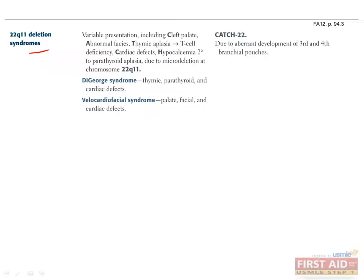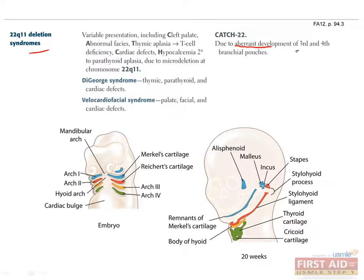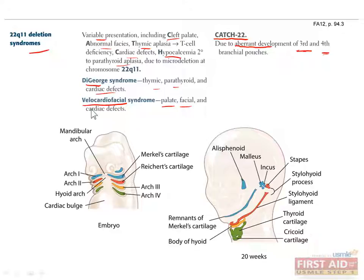Deletions involving chromosome 22 at q11 can lead to several symptoms due to aberrant development of the third and fourth branchial pouches. The third branchial pouch develops into the inferior parathyroid and the thymus, and the fourth branchial pouch develops into the superior parathyroids. The variable presentation includes a cleft palate, abnormal facies, thymic aplasia causing T-cell deficiency, cardiac defects, and hypocalcemia secondary to parathyroid aplasia. You can use the mnemonic CATCH-22 to remember these. DiGeorge syndrome includes the thymic, parathyroid, and cardiac defects, while Velocardiofacial syndrome includes the palate, facial, and cardiac defects.